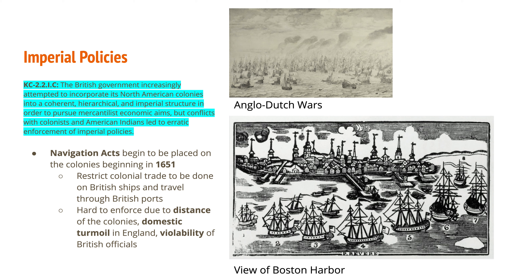The Navigation Acts were designed to keep European rivals from benefiting from England's colonies. In 1651, the Navigation Acts were put in place, and shortly after that, the British and the Dutch went to war. It restricted colonial trade to British ships traveling through British ports, with some exceptions for perishable items. It was hard to enforce because England and the colonies were far apart, England was dealing with wars and civil war, and British officials in the colonies were being bribed by colonists to allow smuggling goods on Dutch or French ships.